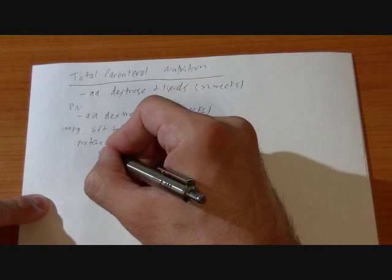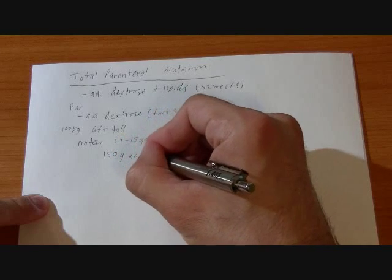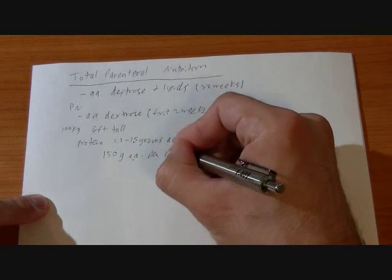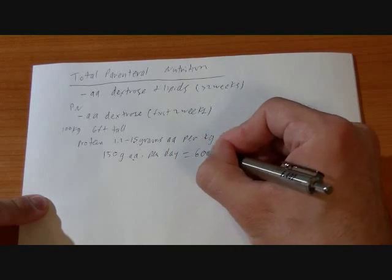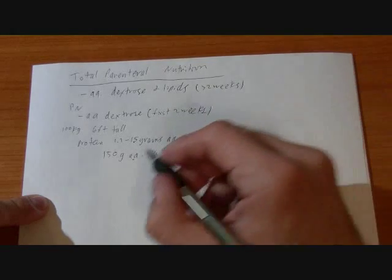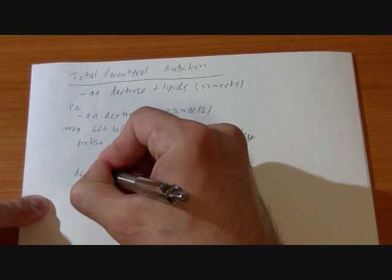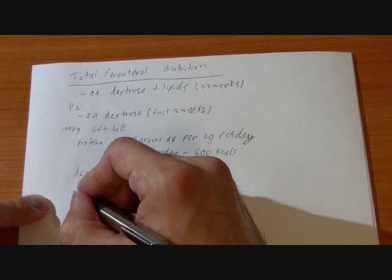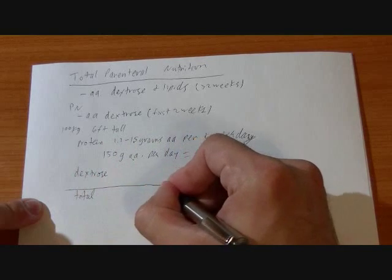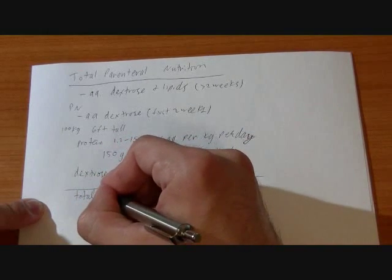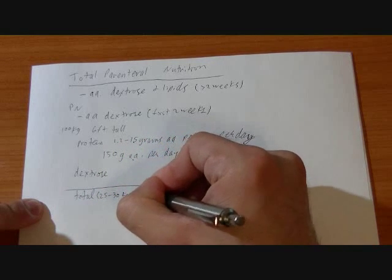For most patients, we'll use the 1.5, so that would end up being 150 grams amino acids per day. And then that's going to be a total of 600 kcals, because each gram of amino acids is 4 kcals. Now we also need dextrose, and for total calories, we want to have 25 to 30 kcal per kilogram per day.